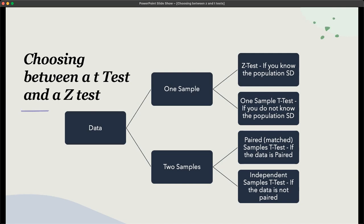And it's very, very rare that you would know the standard deviation. So a one sample T test is if you do not know this population standard deviation, which is normal. So if you only have one sample and you don't know the standard deviation, you're going to use a one sample T test.